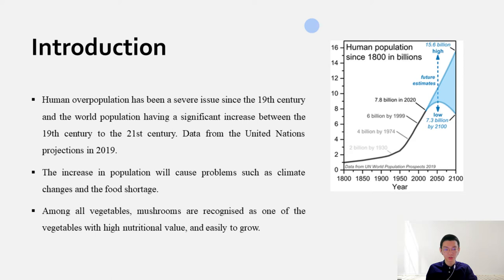The increase in population will cause problems such as climate change and food shortage. The way to solve the food shortage problem is to produce more food than enough for everyone. Vegetables are a great choice. Among all vegetables, button mushrooms are recognized as one of the vegetables with high nutrition value and easily to grow.